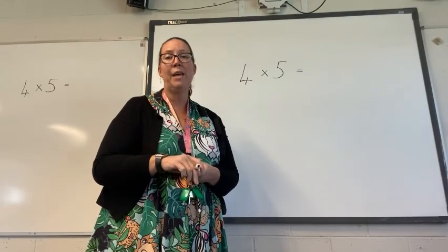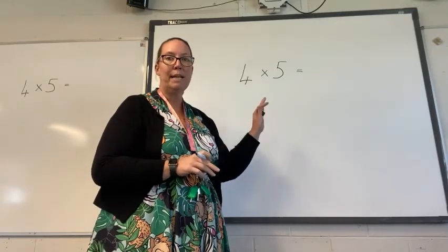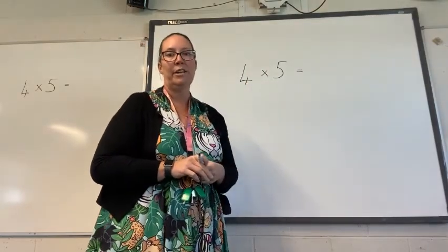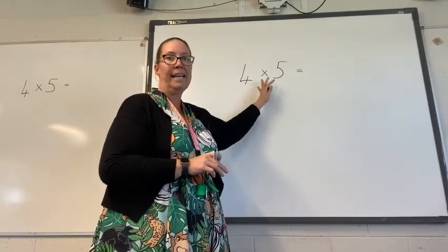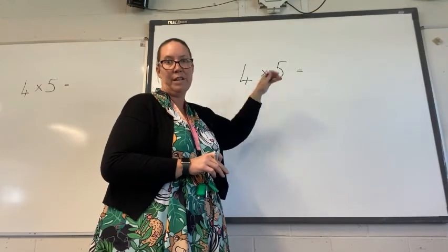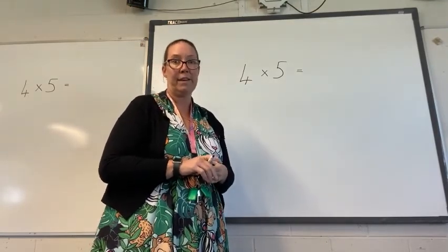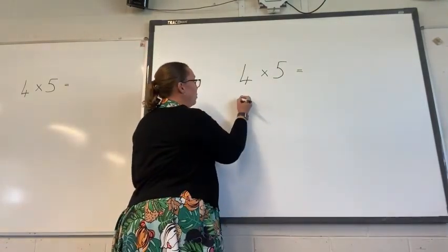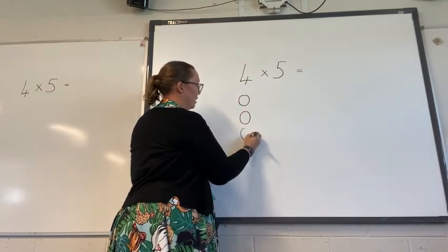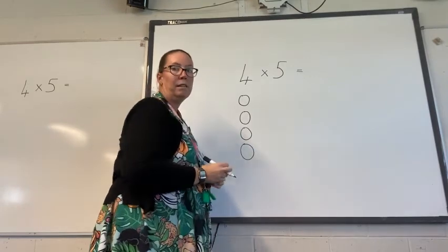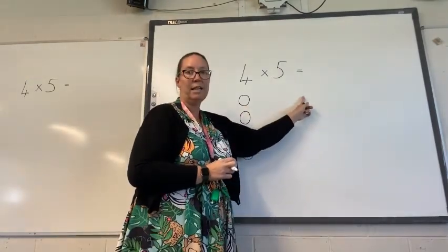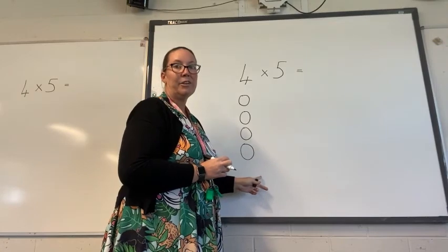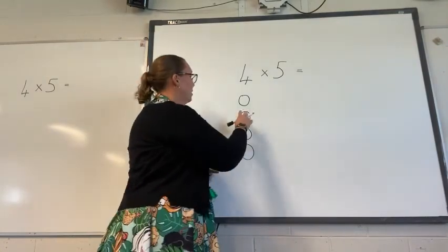Now I'm going to show you how to draw an array to match a number sentence. I've got my number sentence here: four multiplied by five equals. That means I need to have four rows, and in each row I need to have five. Then I can count to see how many I have all together. So I'm going to start off by doing my rows. I'm going to have four rows. Remember, rows go across and columns go down.